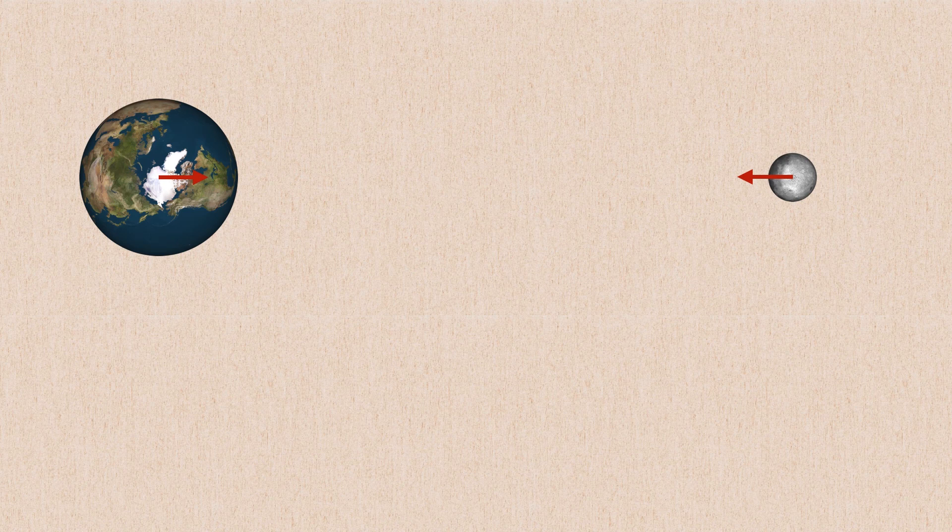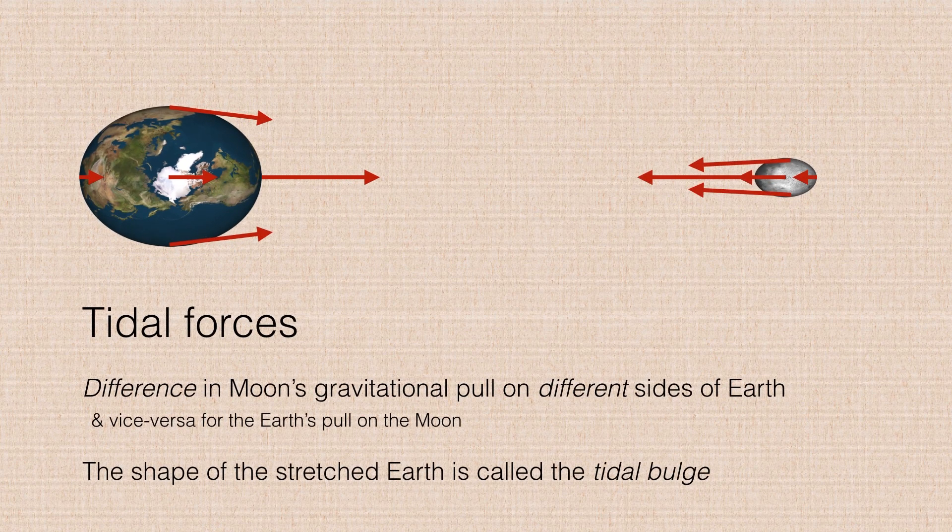But there's a reality here. There's a near side of the Earth that is closer to the Moon, so it feels a stronger gravitational attraction. Likewise, there's a far side feeling a weaker gravitational attraction, and a middle part feeling a middle weight gravitational attraction. And notice that those gravitational attractions have to be angled slightly to be directed toward the Moon.